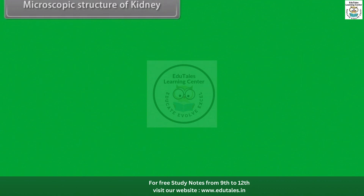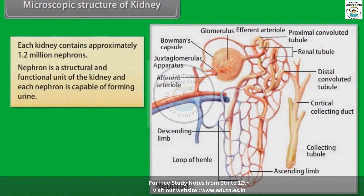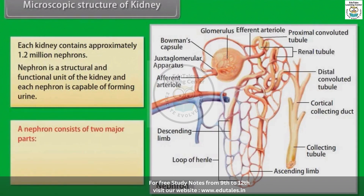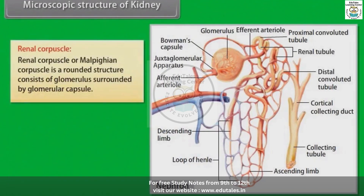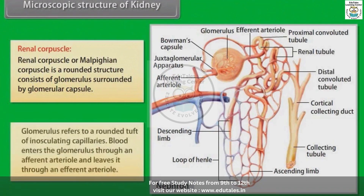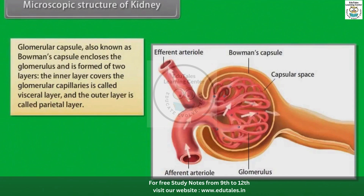Microscopic structure of the kidney. Each kidney contains approximately 1.2 million nephrons. A nephron is the structural and functional unit of the kidney, and each nephron is capable of forming urine. A nephron consists of two major parts: the renal corpuscle and the renal tubule. The renal corpuscle, also called the Malpighian corpuscle, is a rounded structure consisting of a glomerulus surrounded by a glomerular capsule. The glomerulus refers to a rounded tuft of anastomosing capillaries. Blood enters the glomerulus through an afferent arteriole and leaves through an efferent arteriole.